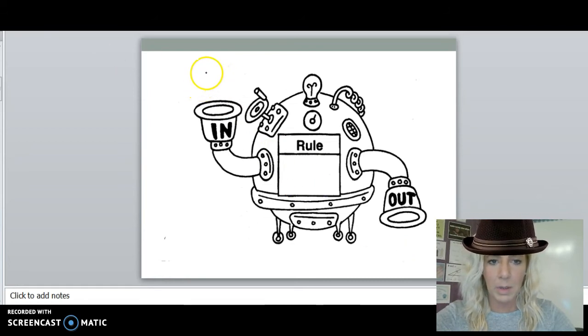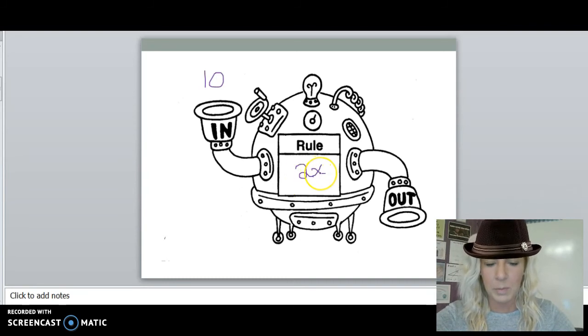Let's try another example. If I have an input of 10, and my rule is 2x. Again, this means 2 is being multiplied by x. In this case, my input or my x value is 10. So 2 times 10 is 20. So for every input, I have exactly one output.